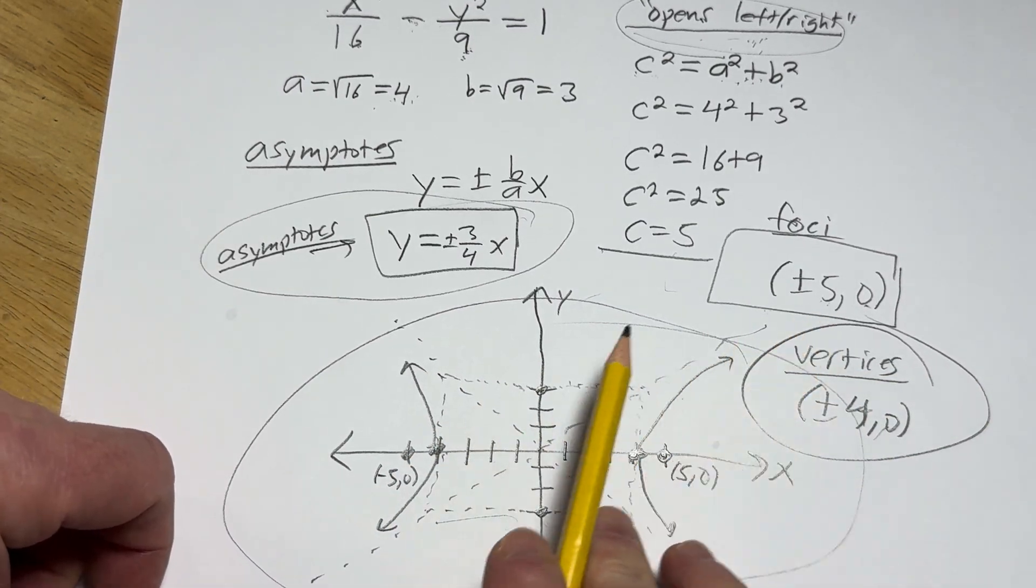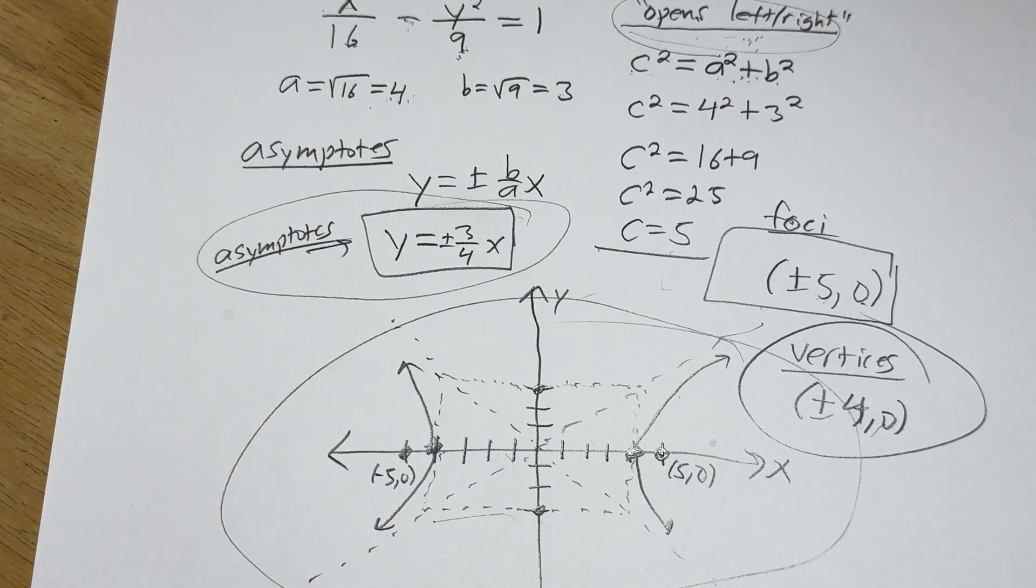It opens left and right. The vertices are always on the hyperbola, so those are the vertices there. There's the foci. There's the asymptotes. There's the graph. That's everything. I hope it's been helpful.